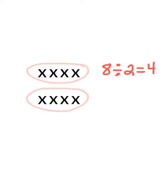I have two rows with four X's in each row. So if I wanted to divide this amount into, say, two groups, I might create a division number sentence that looks like this. Eight divided into two groups would give me four in each group. And as you can see, I can just create two groups by circling the two rows. Eight X's divided into two groups would give me four in each group.